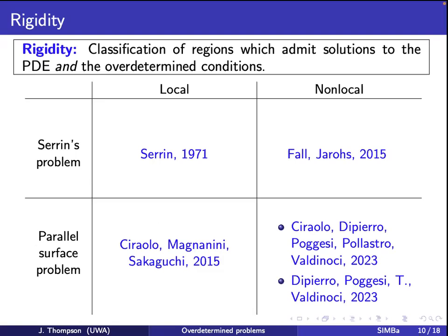The parallel surface problem for the local case was done by Ciraolo, Magnanini, and Sakaguchi in 2015. Fall and Jarohs solved the non-local Serrin's problem in 2015. For the non-local parallel surface problem there are two papers: the first by Ciraolo, Di Pirro, Procesi, Palatucci, and Valdinoci handled the case with right-hand side equal to one.